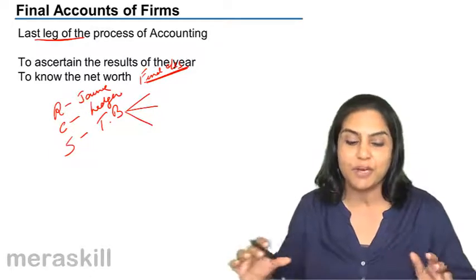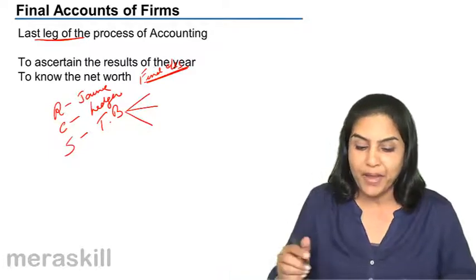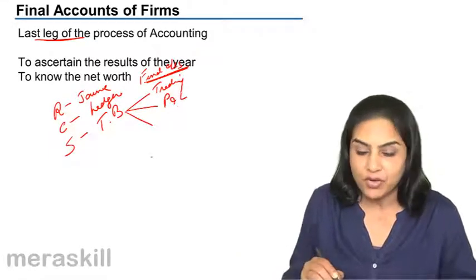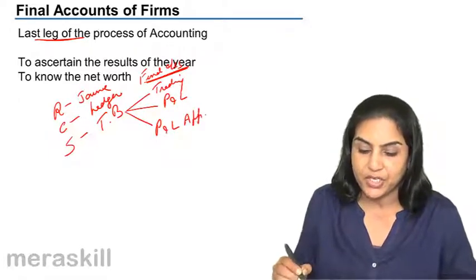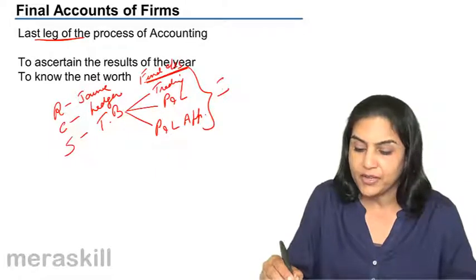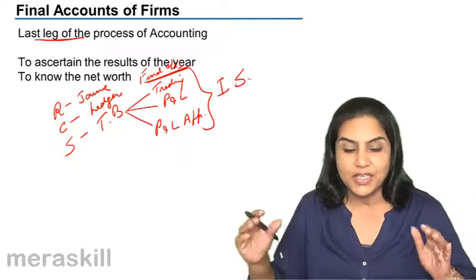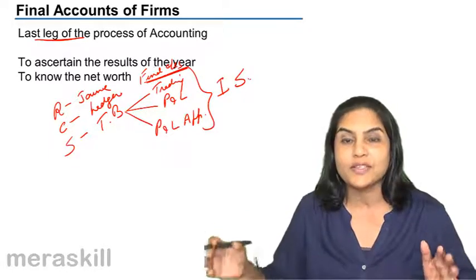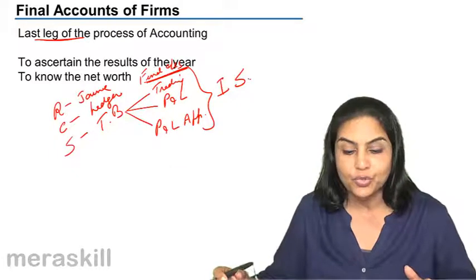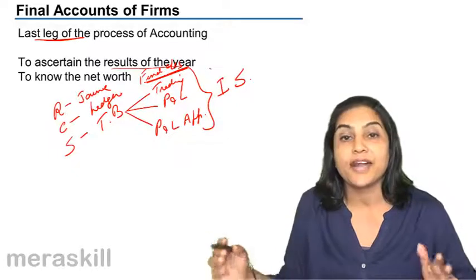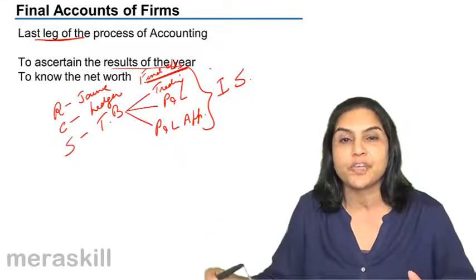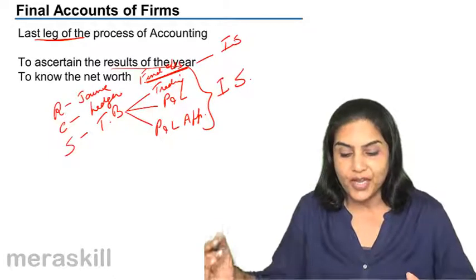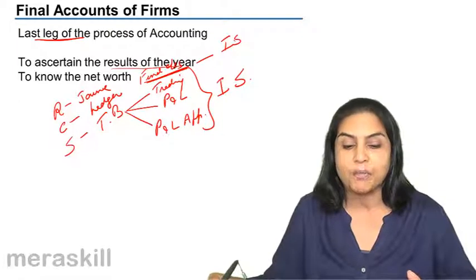So this is the last bit of the process of accounting. We will prepare the trading account, a profit and loss account, and a profit and loss appropriation account. Together these could be called the income statement, prepared in order to know the performance of the organization — what are the profits or losses — to ascertain the results of the business activities for that particular year.